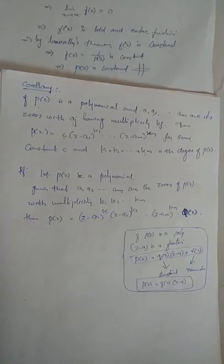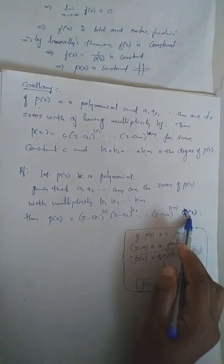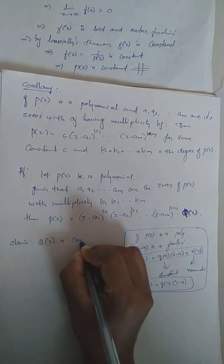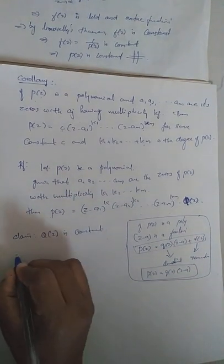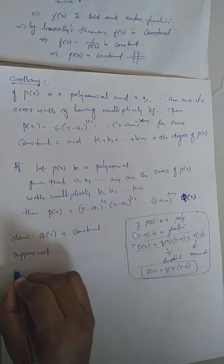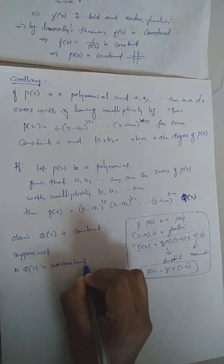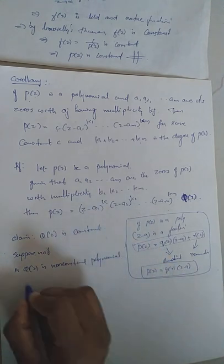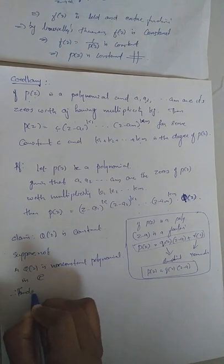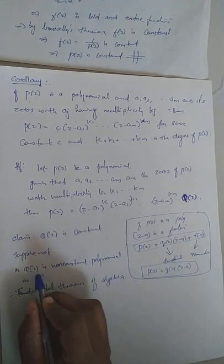We need to prove that Q(z) is just a constant C. We prove this by contradiction. Suppose Q(z) is not constant — that is, Q(z) is a non-constant polynomial in C. Therefore, by the Fundamental Theorem of Algebra, this non-constant polynomial Q(z) will have a zero.